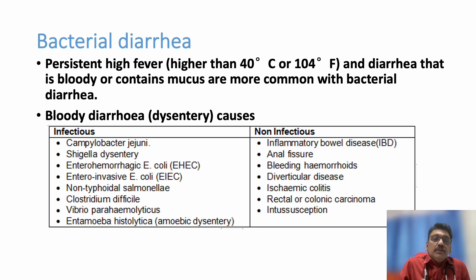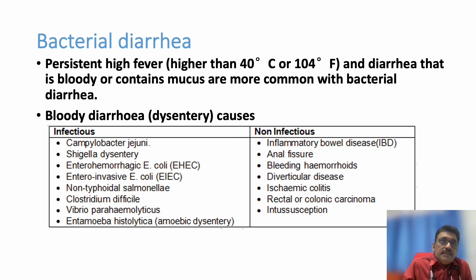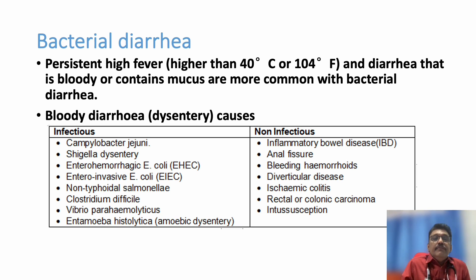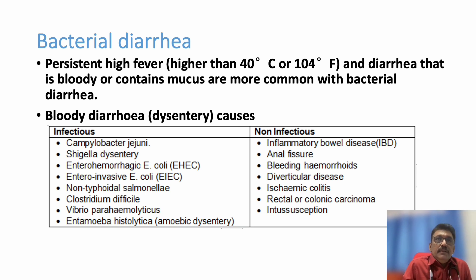Different types of bacteria can also produce diarrhea. Bacterial diarrhea typically presents with high-grade fever, abdominal pain, and diarrhea. Many patients with bacterial infection can have blood in stools — that is a major difference between viral and bacterial diarrhea. Organisms causing bloody diarrhea include Campylobacter, Shigella, E. coli, non-typhoidal Salmonella, Clostridium difficile, Vibrio parahaemolyticus, and Entamoeba histolytica. Not all infections produce bloody diarrhea, but blood in stools with high fever and abdominal pain suggests an infectious cause.